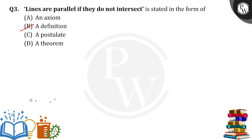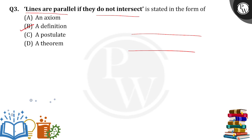So what is the definition? Lines are parallel if they do not intersect. Means if you take any two lines and they do not intersect each other, of course they are parallel to each other. So this option is the right answer.